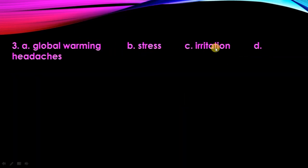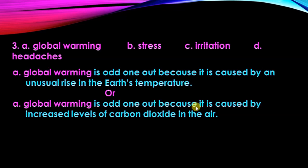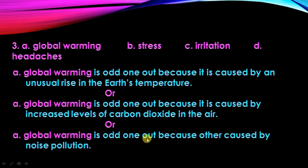Third set: A — global warming, B — stress, C — irritation, D — headache. Global warming is odd one out because it is caused by an unusual rise in the earth's temperature, or because it is caused by increased levels of carbon dioxide in the air. You can also write: global warming is odd one out because others — stress, irritation, and headache — are caused by noise pollution.